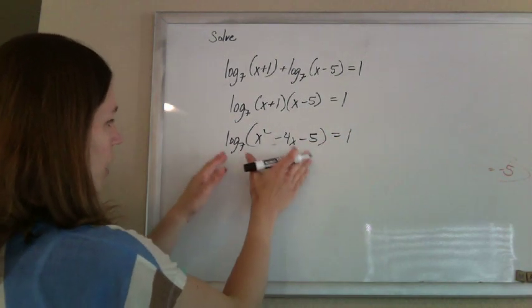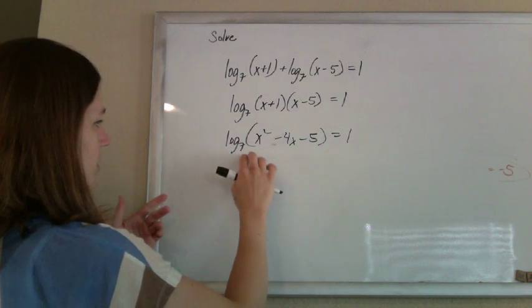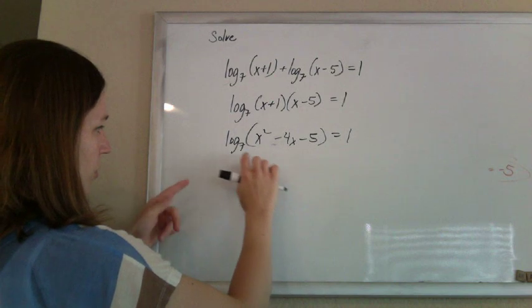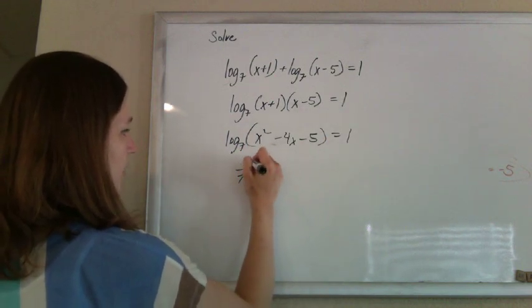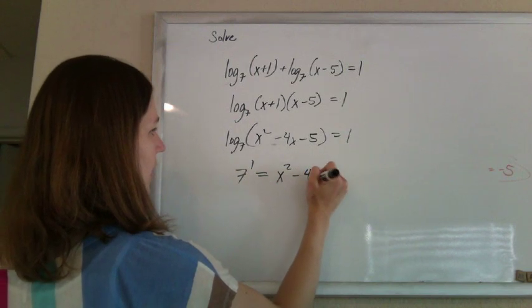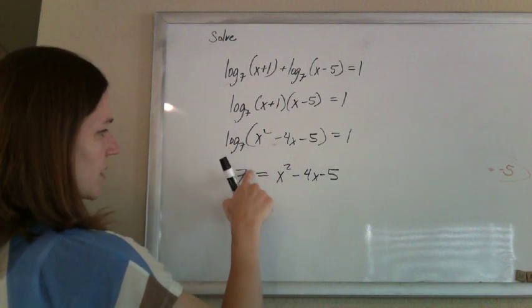now that the log is cleaned up, to undo a log, we want to introduce an exponent. So writing this in exponential form, 7 to the 1 will equal that. So the base 7 to the power 1 will equal x squared minus 4x minus 5. 7 to the 1 is just 7.